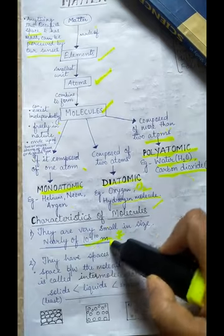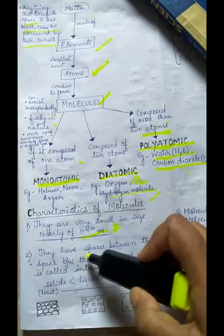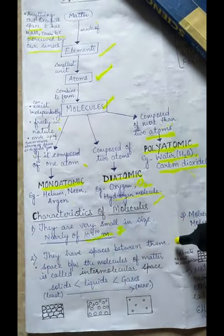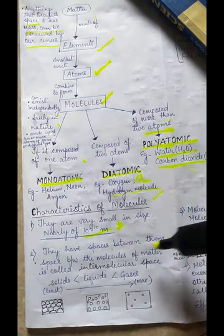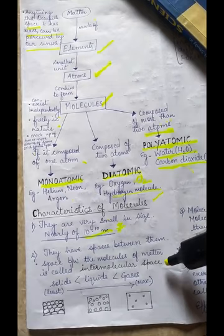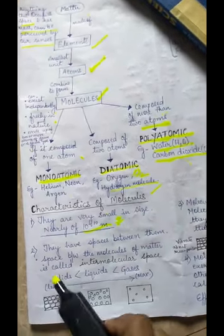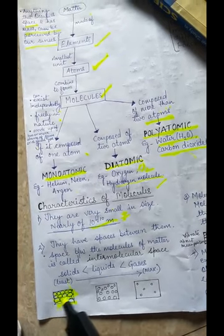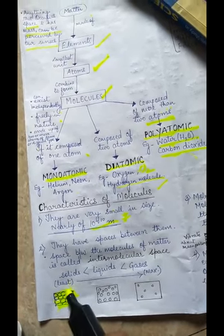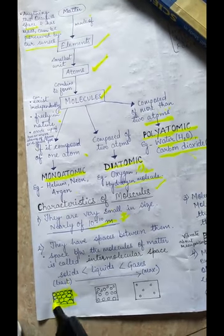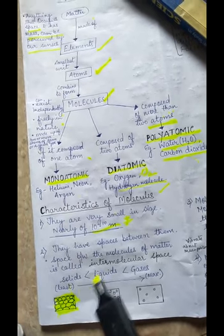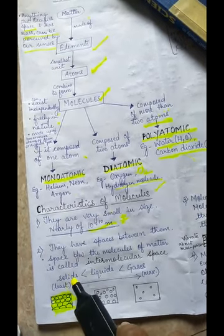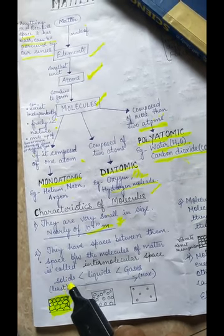Molecules have spaces between them, and this space between the molecules is known as intermolecular space. When you see the molecular arrangement of solids, they are tightly packed with no space between them, so the intermolecular space is least in the case of solids.